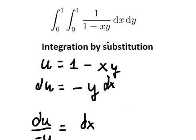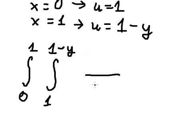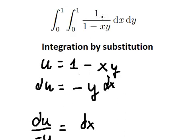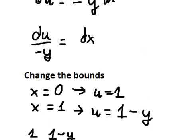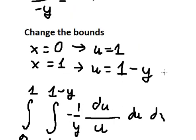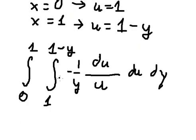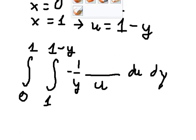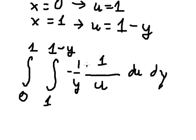So 1 minus xy is replaced by u, and dx is replaced by du over negative y.